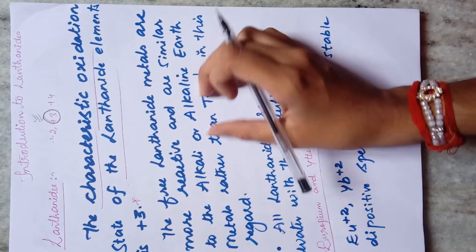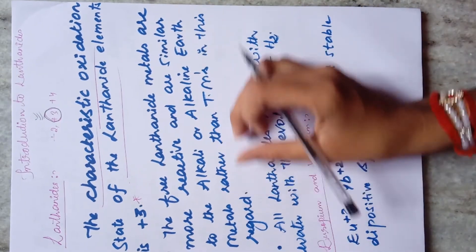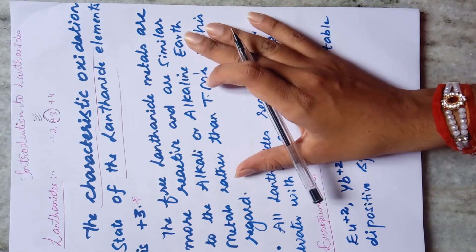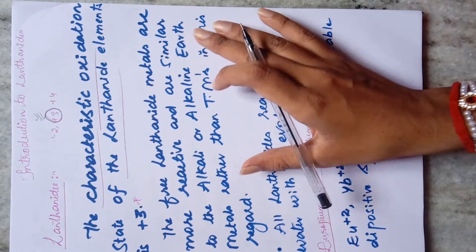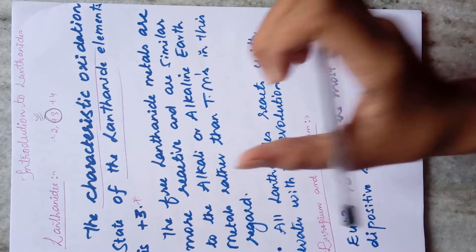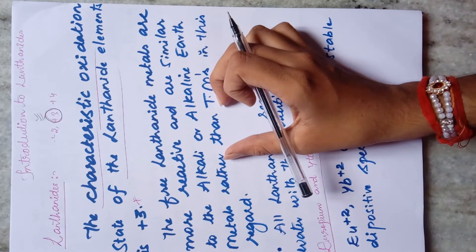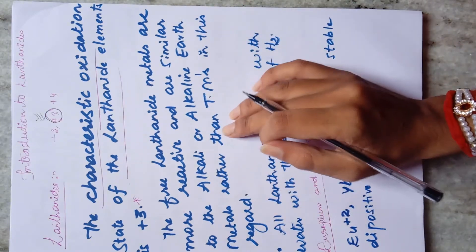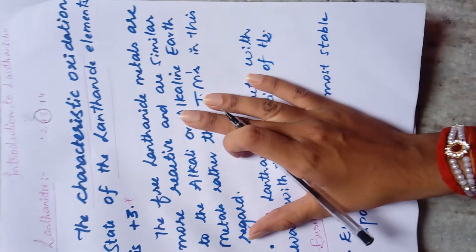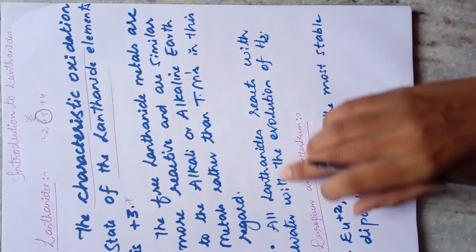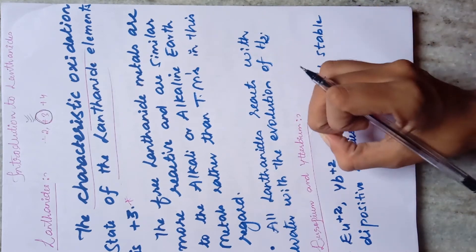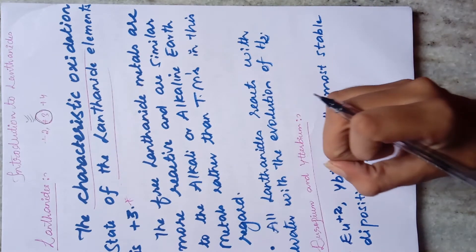The free lanthanide metals are more reactive and are similar to alkali or alkaline earth metals rather than transition metals. Although these are inner transition elements, their properties and reactivity resemble Group 1A and 2A elements. All lanthanides react with water with the evolution of hydrogen.